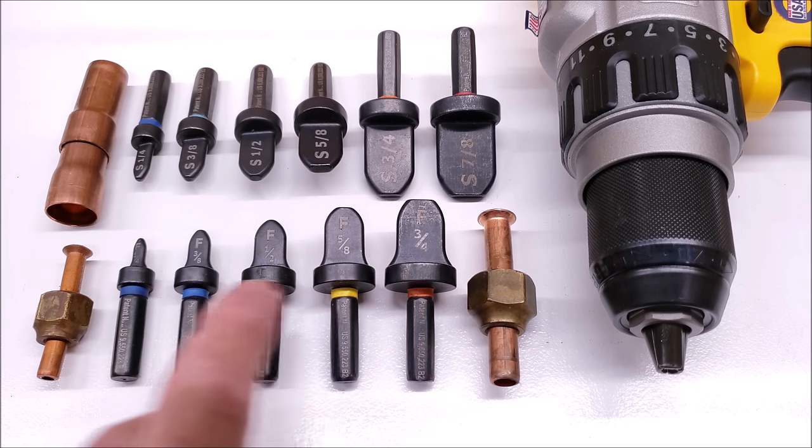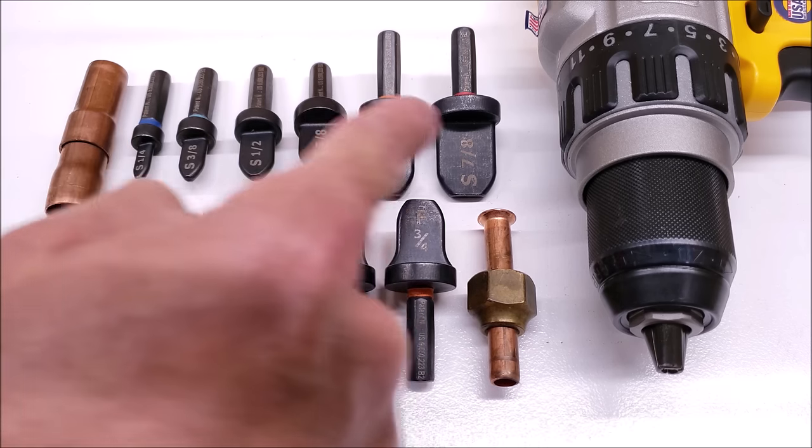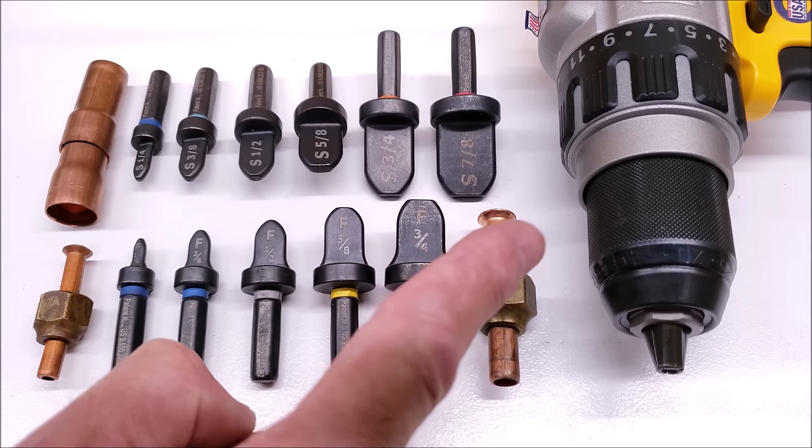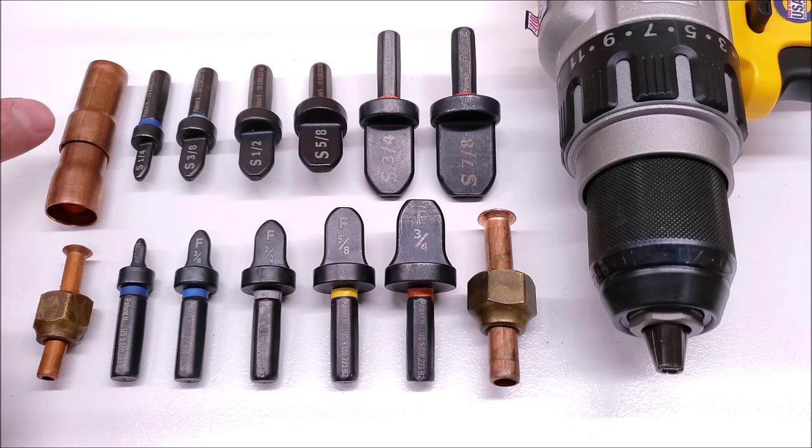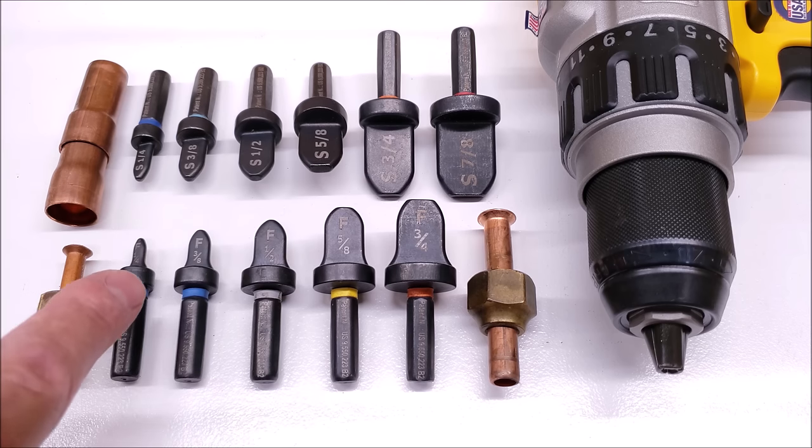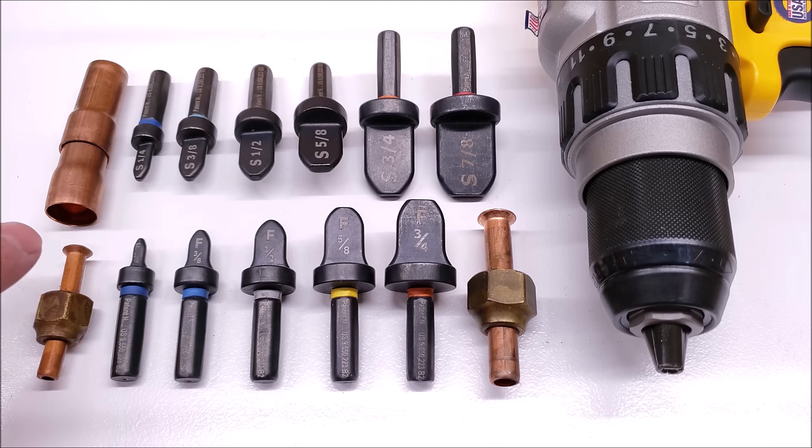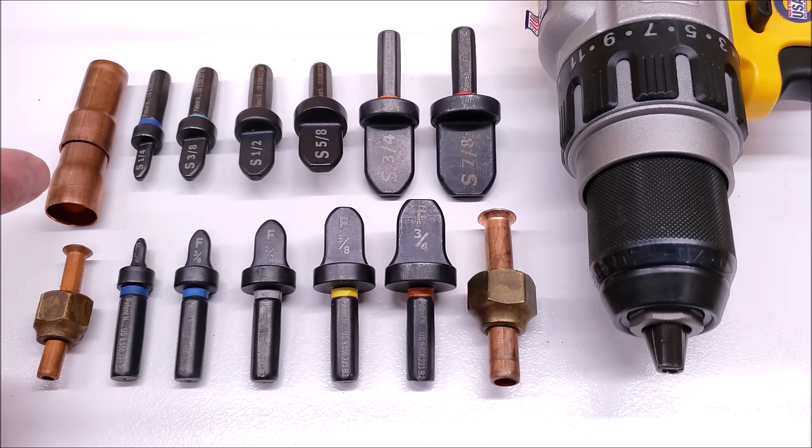These are the spin flares and these are spin swages. You put them into a high RPM and high torque drill to heat up your copper and expand it. They're also used to make our copper tube flares. I'm going to show you an example of how to make a swage and also how to make a flare joint along with the step-by-step connection at the joint.